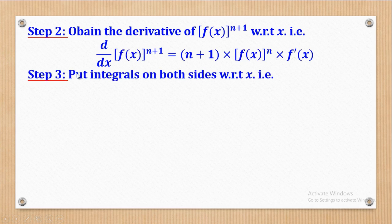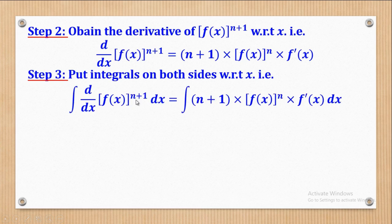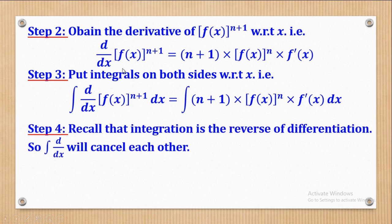Step three is to put integrals on both sides — place an integral sign on each side. Step four is to recall that integration is the reverse of differentiation. This means the integral and the derivative will cancel each other, so in other words these two cancel, leaving f(x) raised to the power n plus one on one side.